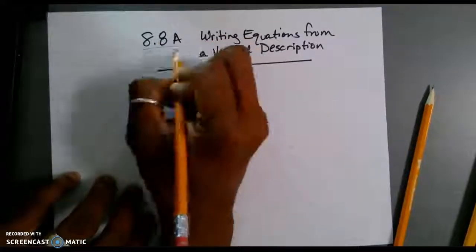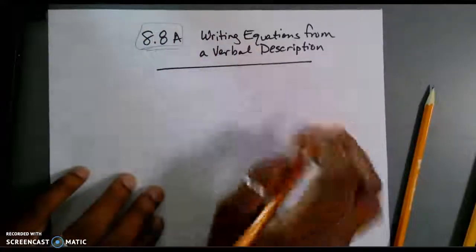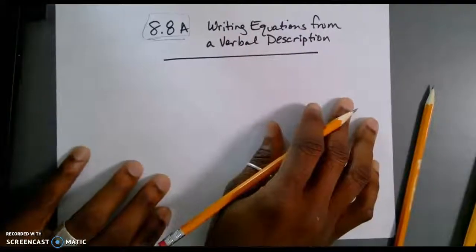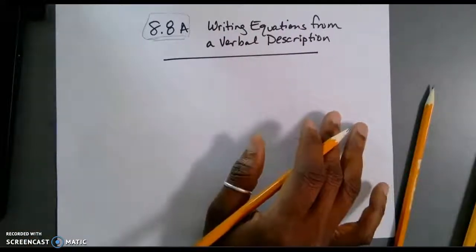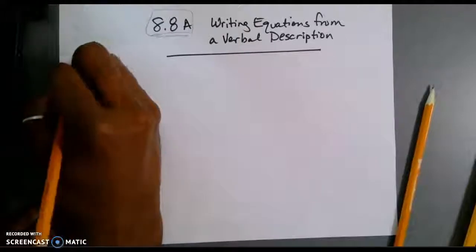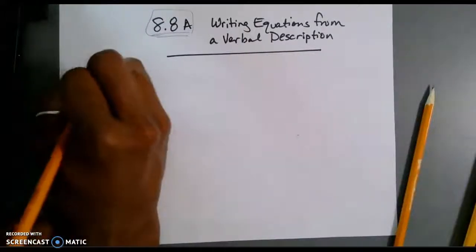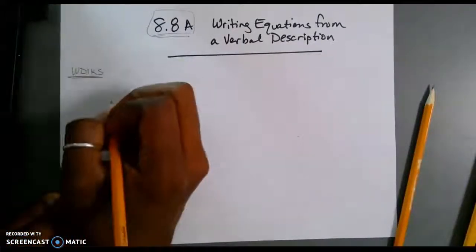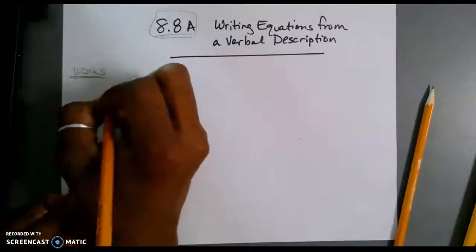As promised, this is going to be 8.8a, writing equations from a verbal description. As always, normally, I'm going to have to write my WDIKs. The WDIKs stand for what do I know? What are those things that I know?